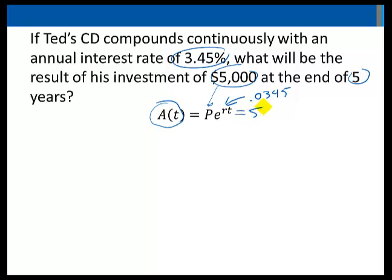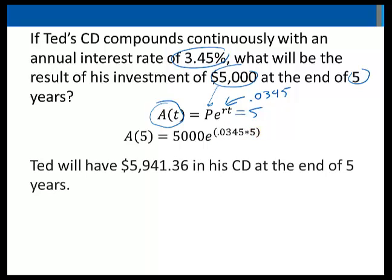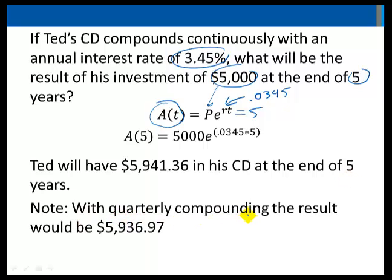We'll plug these numbers in and have A equals 5,000 times E raised to the power 0.0345 times 5. Through a calculator, Ted will have $5,941.36 in his CD at the end of 5 years. We solved the same problem earlier using quarterly compounding and found the result to be $5,936.97, which was $4.39 less than Ted got with continuous compounding.